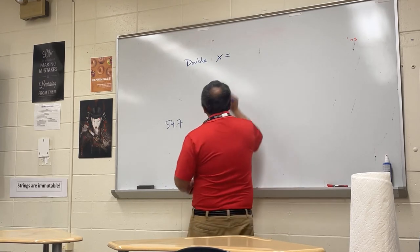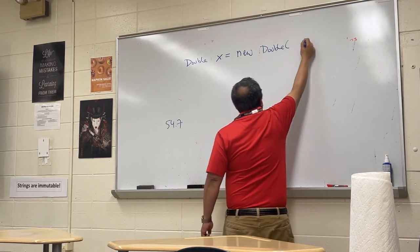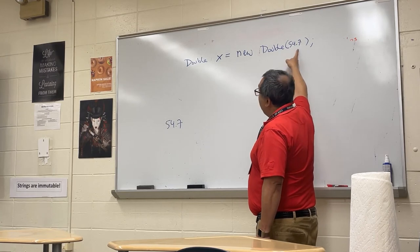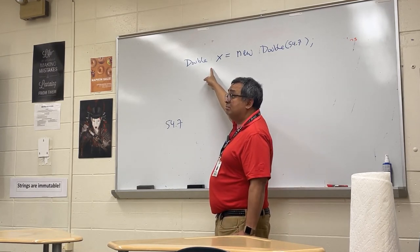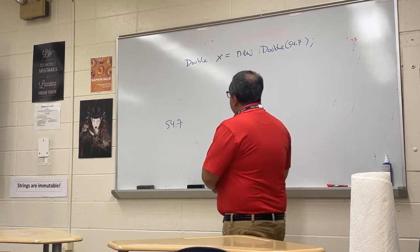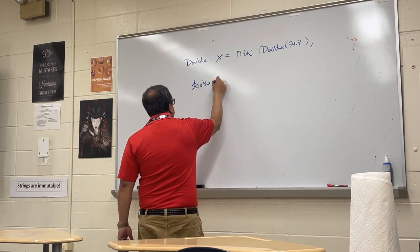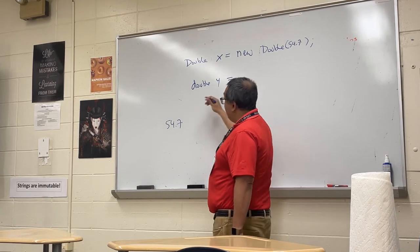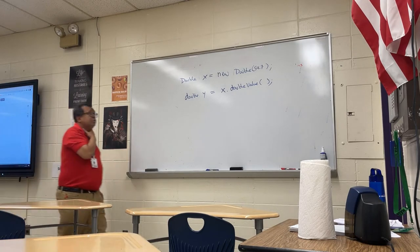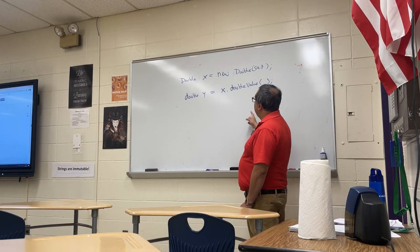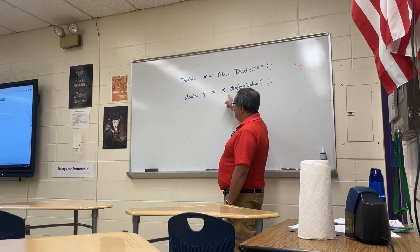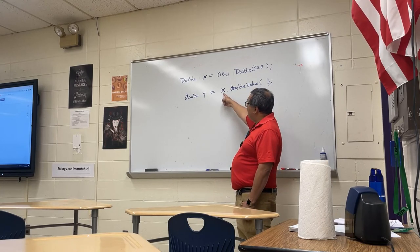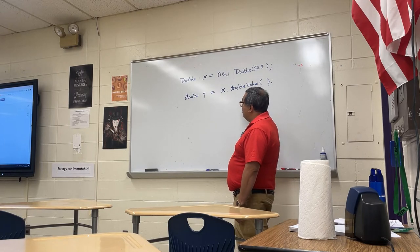You go: new Double(54.7). So this takes the decimal literal and converts it into an object. I could also go the other way: double y — that's a primitive — and I want to take this object x and convert it back into a primitive. The method to convert from the object version back to the primitive is called doubleValue(). You take the object and call doubleValue() on it, and it returns a primitive double.